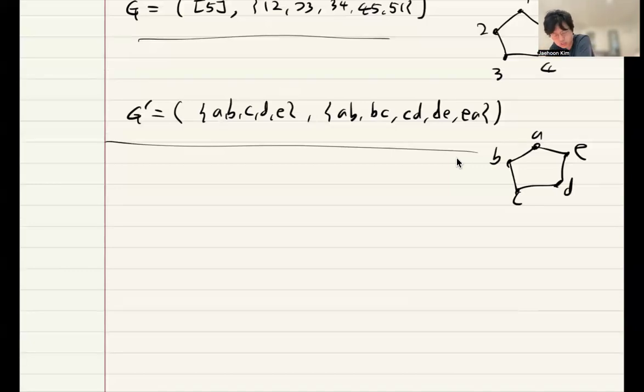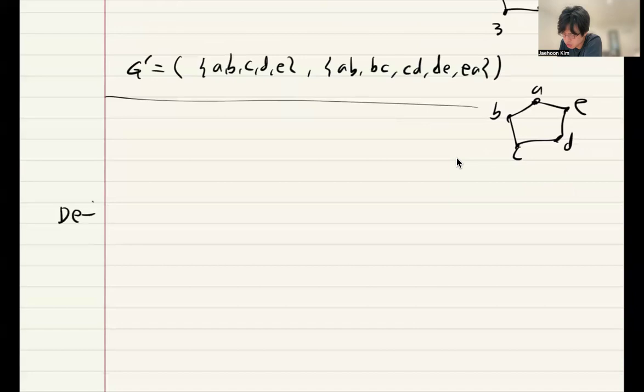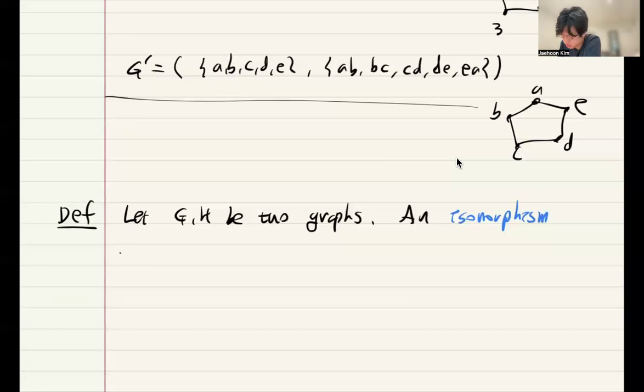So, in order to treat these two indistinguishable graphs as one object, which has the same structural information, we introduce the following concept of graph isomorphism. So, let G and H be two graphs, and we define an isomorphism from G to H.